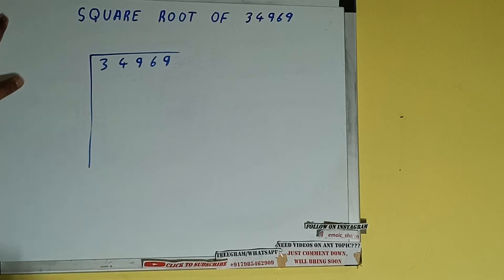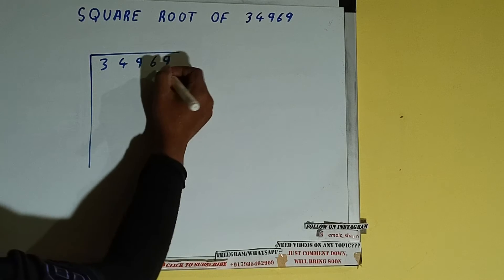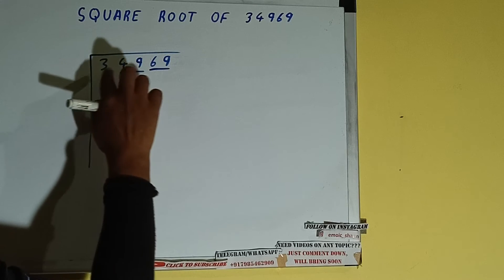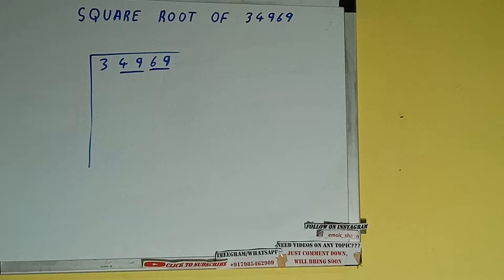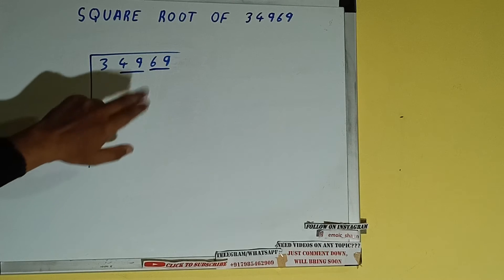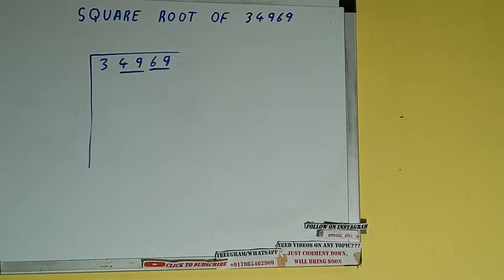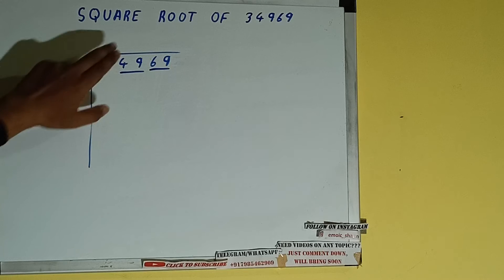Next thing we need to do is form pairs from the right-hand side. So one pair will be this, one pair will be this, and this 3 will be left out. So first we will divide this 3 and then we'll bring down the pairs.